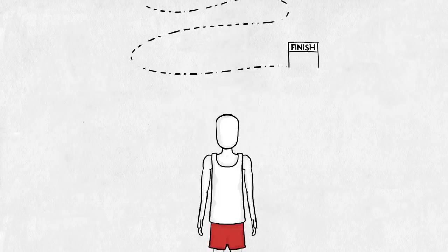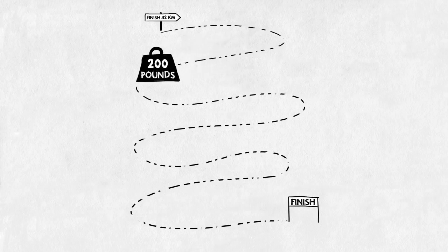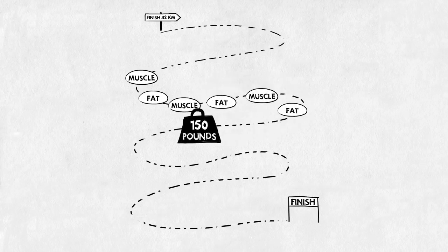The marathoner is a different story. Every pound in his body has to be carried around for a total of 42 kilometers. He gains a lot of benefits by being light. So all excessive muscle mass and fat has to be shed in order to be a top marathoner.